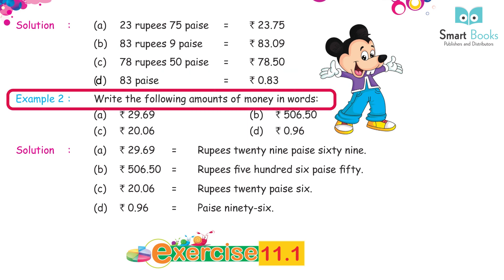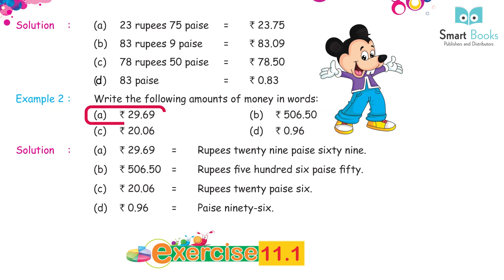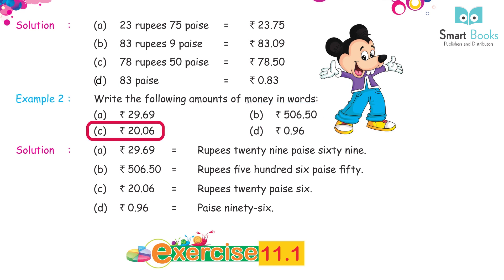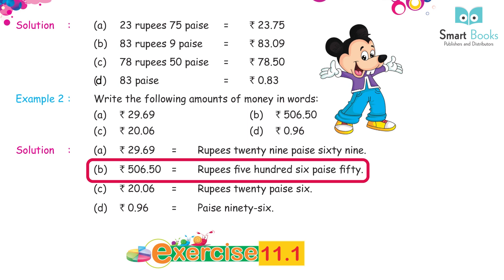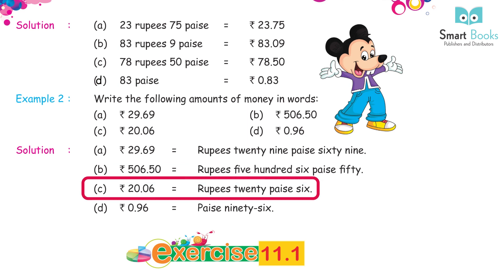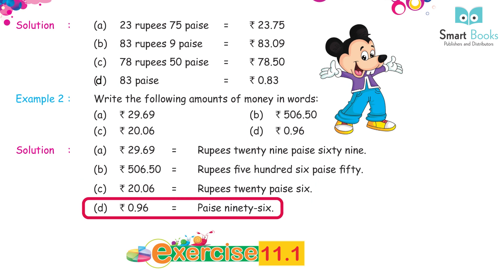Example 2: write the following amounts of money in words. a. Rs. 29.69. b. Rs. 506.50. c. Rs. 20.06. d. Rs. 0.96 equals 96 paise.